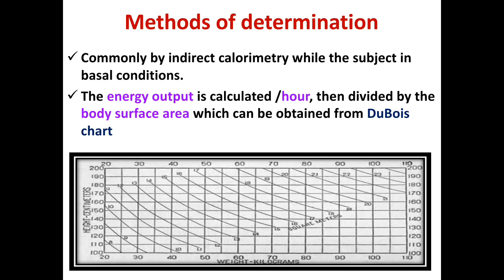Methods of determination of basal metabolic rate are commonly by two methods: direct calorimetry or indirect calorimetry. Direct calorimetry measures directly the actual heat released from the body per unit of time. Indirect calorimetry calculates heat produced per unit of time. Commonly, BMR is measured by indirect calorimetry while the subject is in basal condition; the energy output is calculated per hour, then divided by the body surface area calculated from a chart.